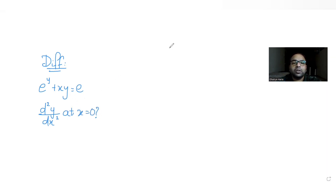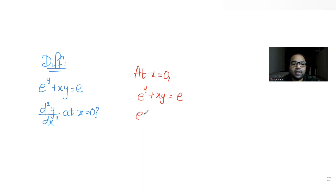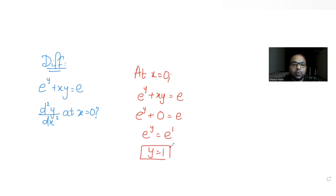First, let's put x equals to 0 and find the value of y. Substituting x as 0 in the expression, I get e raised to (y + 0·y), which is e raised to y, equals e. Since e raised to y equals e raised to 1, comparing both sides I get y equals 1.